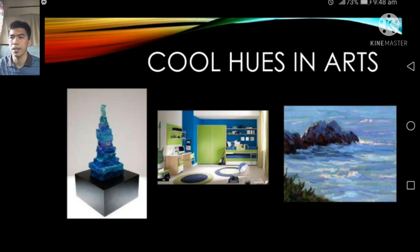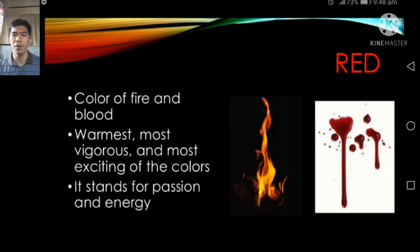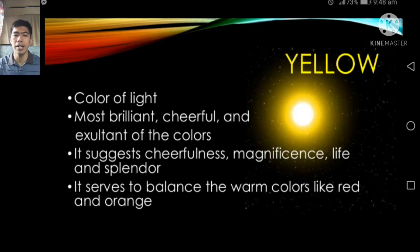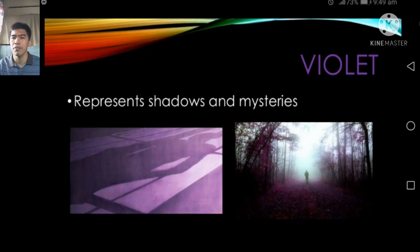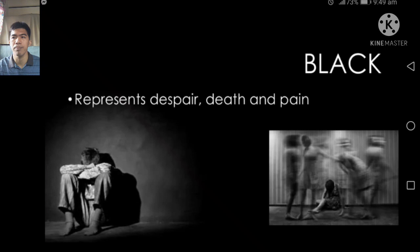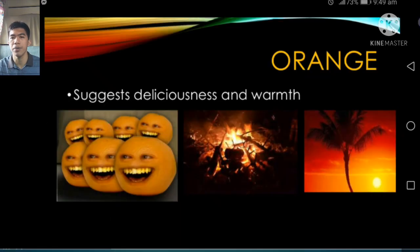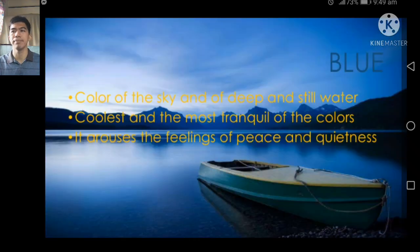Individual color meanings: Red — color of fire and blood, warmest, most vigorous and exciting, stands for passion and energy. Yellow — most brilliant, cheerful, and exultant, suggests cheerfulness, magnificence, life, and splendor; serves to balance warm colors. Green — color of vegetation, symbolizes life and freshness. Violet — represents shadows and mystery. Black — represents despair, death, and pain. Orange — suggests deliciousness and warmth. Blue — color of the sky and deep water, most tranquil, arouses feelings of peace and quietness.